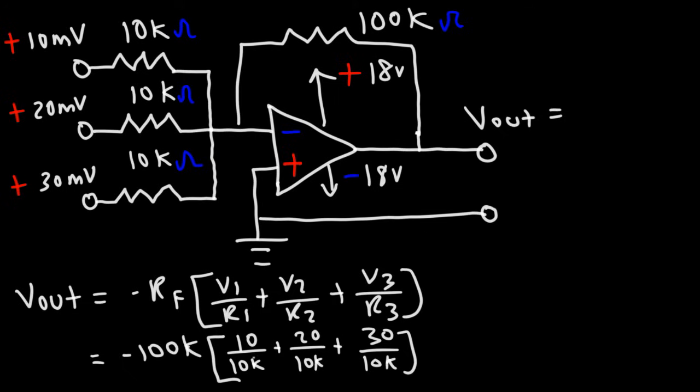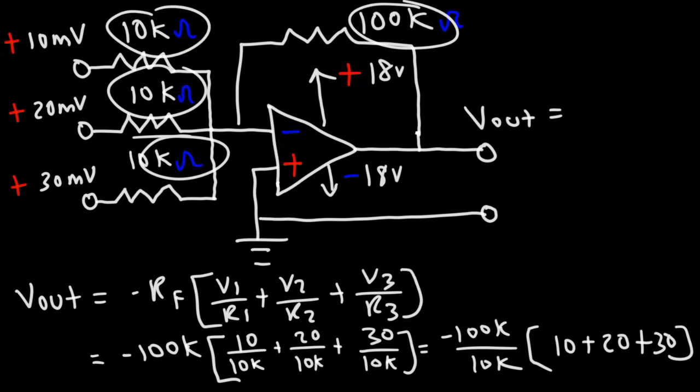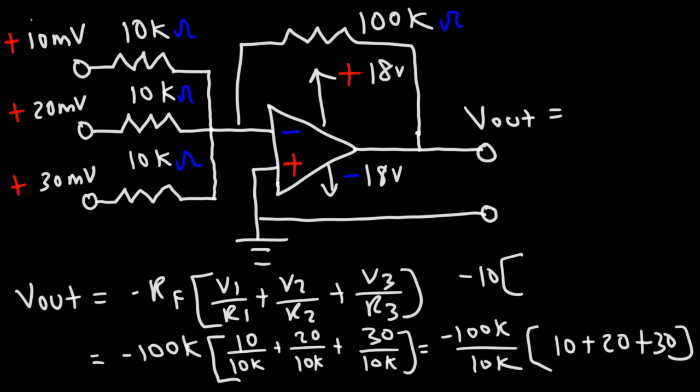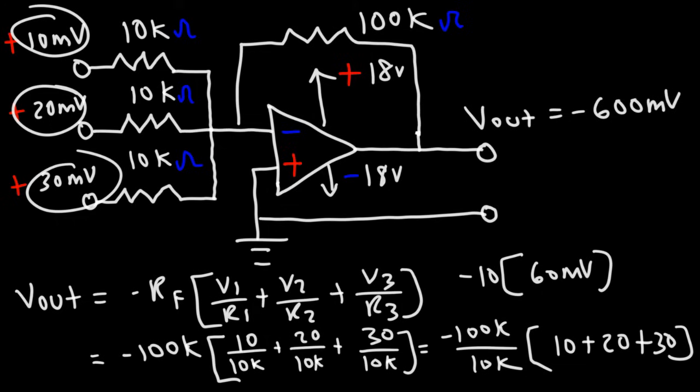So I'm going to factor out this 10k resistor. So it becomes negative 100k divided by 10k times the sum of the input voltages, which is 10 plus 20 plus 30 millivolts. So notice that the feedback resistor is 10 times higher than all of the other three equivalent resistors. So therefore, the summing amplifier will amplify the sum of the input voltages by a factor of 10. The sum of the input voltages, 10 plus 20 plus 30, is 60 millivolts. Multiplying that by 10, this is going to be negative 600 millivolts. So that's the final answer to this problem.